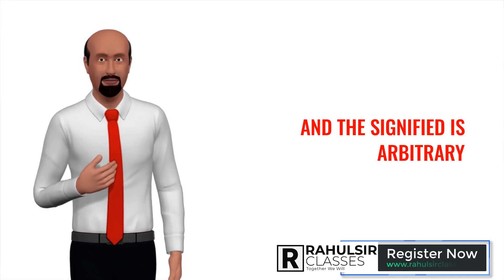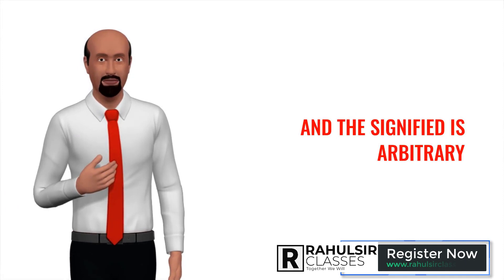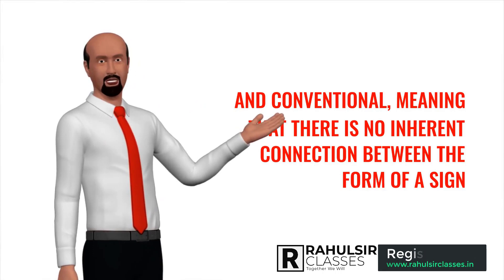According to Saussure, the relationship between the signifier and the signified is arbitrary and conventional, meaning that there is no inherent connection between the form of a sign and its meaning.